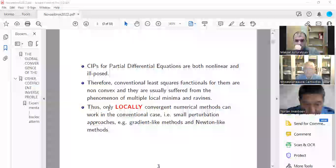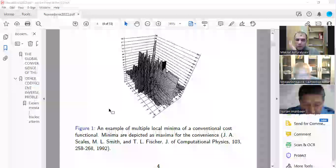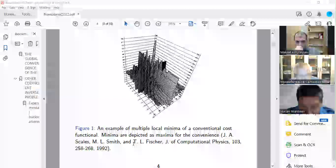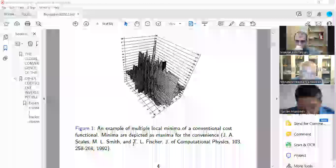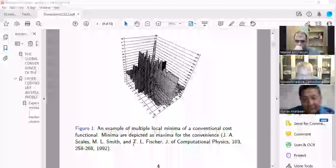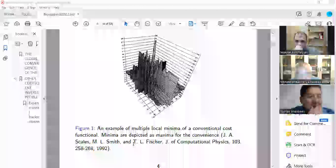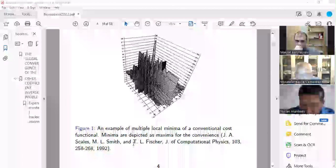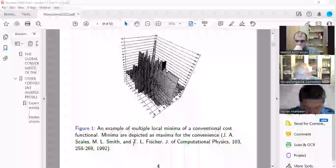Here is a very good example. It's not mine, by the way. It was published 20 years ago, in 1992, by Scales, Smith, and Fischler. This is a surface of the functional, least squares functional, for a very simple inverse problem, a one-dimensional inverse problem for a wave equation. What you have here is 55 parameters, not the coefficient itself, but parameters, for example splines or finite differences or something. So 55 parameters, and 53 of them are set to be correct ones, but two parameters are varying, only two.